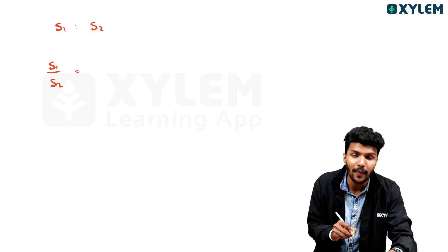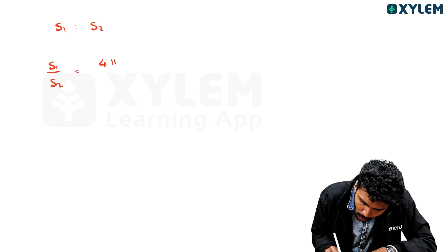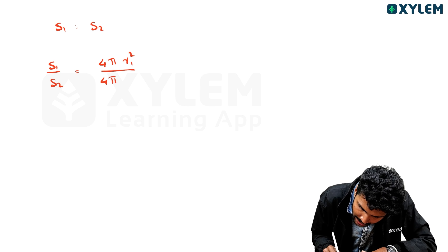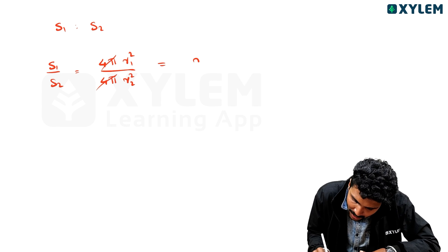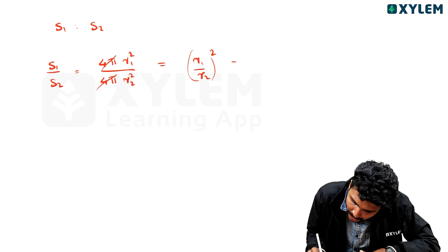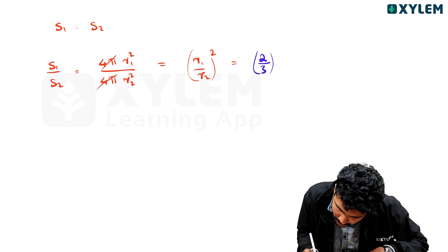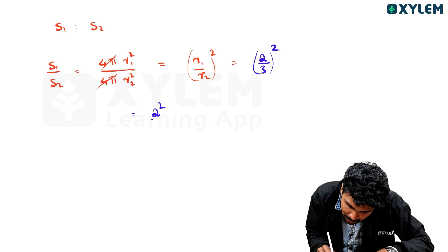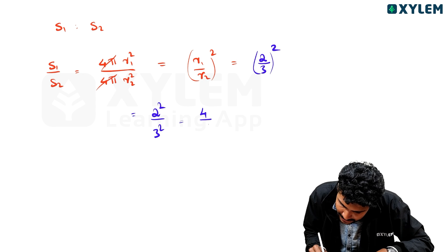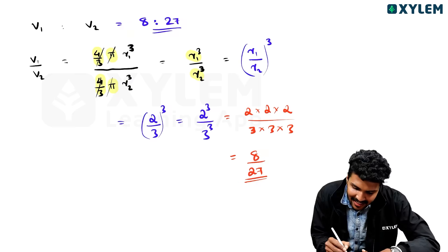Now for the surface area: S1 is to S2. S1 by S2 equals 4 pi r1 square by 4 pi r2 square. 4 pi cancels, leaving R1 by R2 squared. R1 by R2 is 2 by 3, so 2 by 3 squared equals 2 square by 3 square. 2 square is 4, 3 square is 9. Ratio is 4 is to 9.